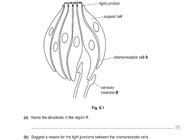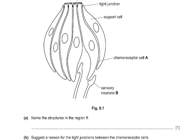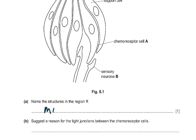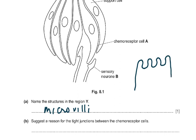The question asks to name the structures in region Y. Those are microvilli — they are the infoldings of the cell membrane. So if this is a cell, then these will be the microvilli. Microvilli, or we can also say brush border, was also allowed by Cambridge.